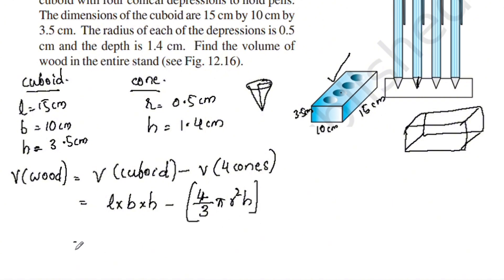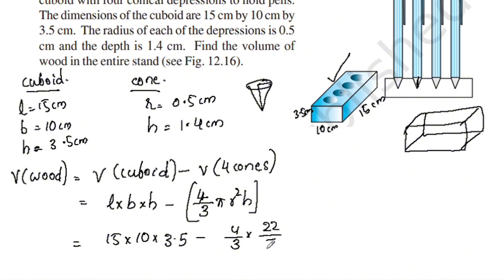Substituting values: length is 15, breadth is 10, height is 3.5, minus (4/3) × π, where π is 22/7, r is 0.5, so r² is 0.5 × 0.5, and height is 1.4.